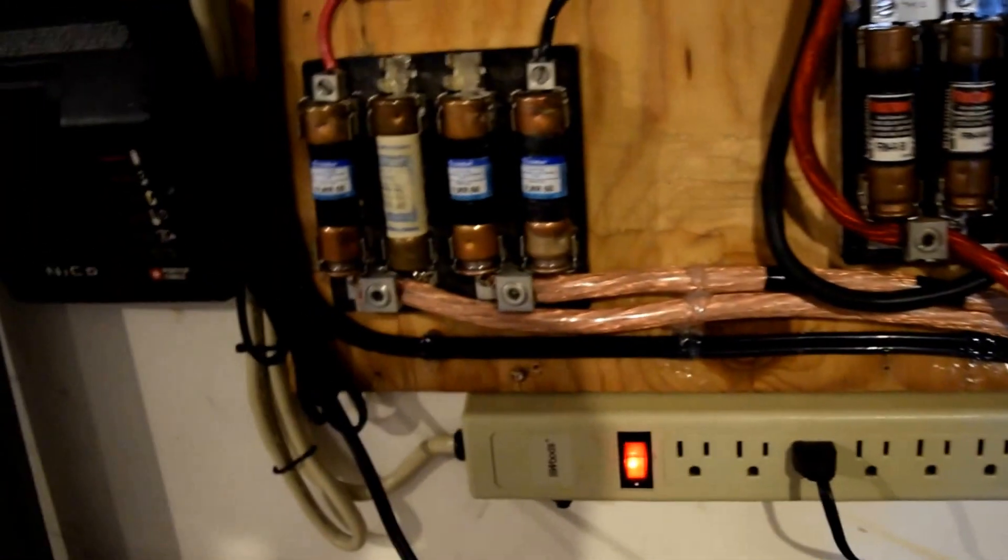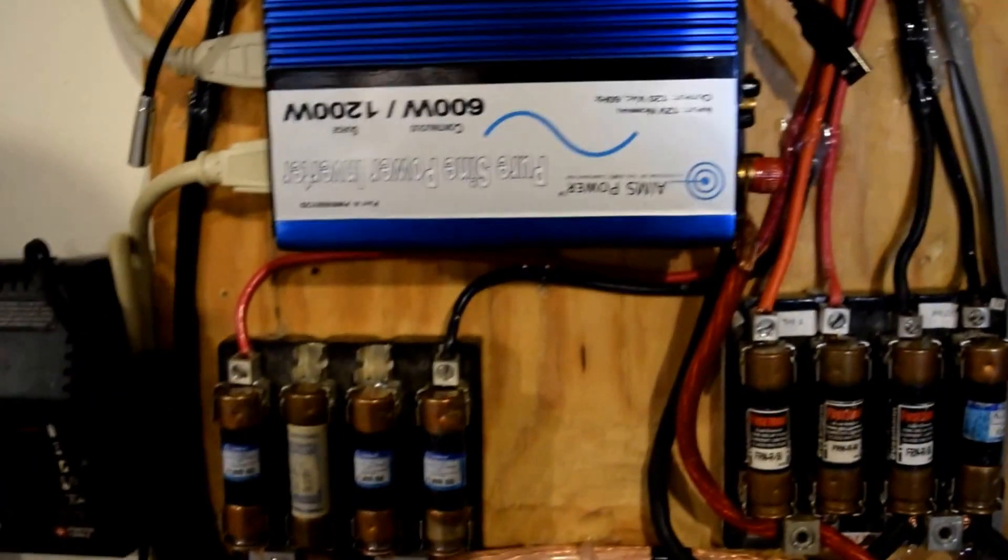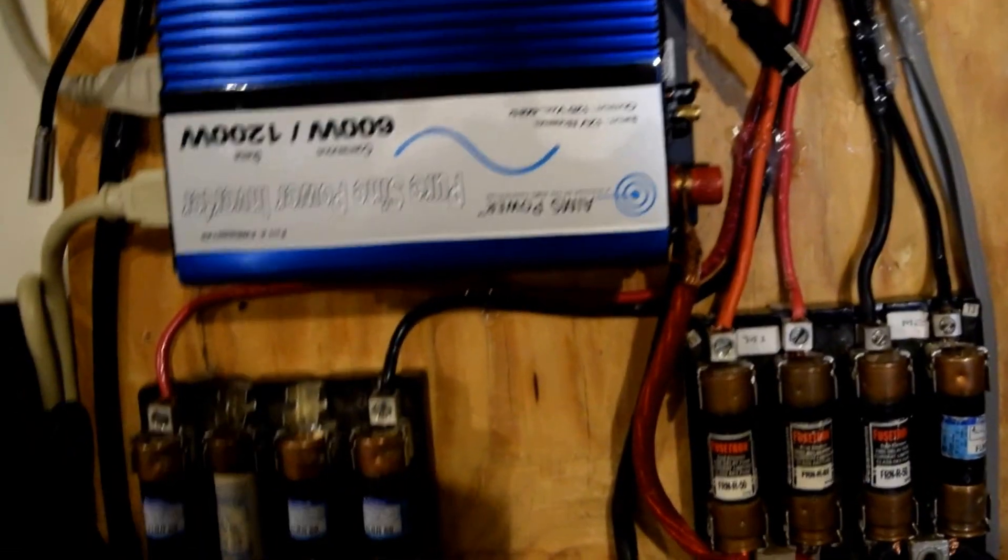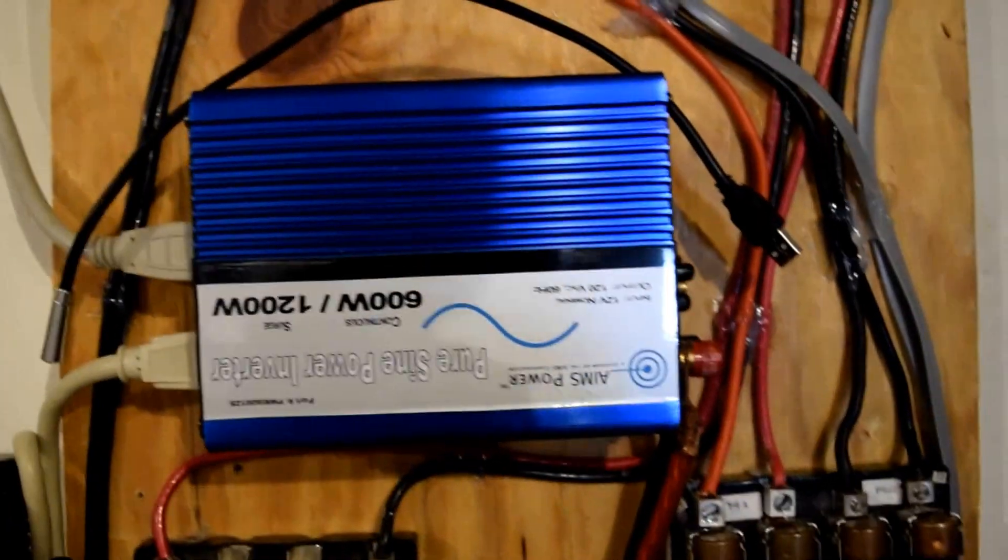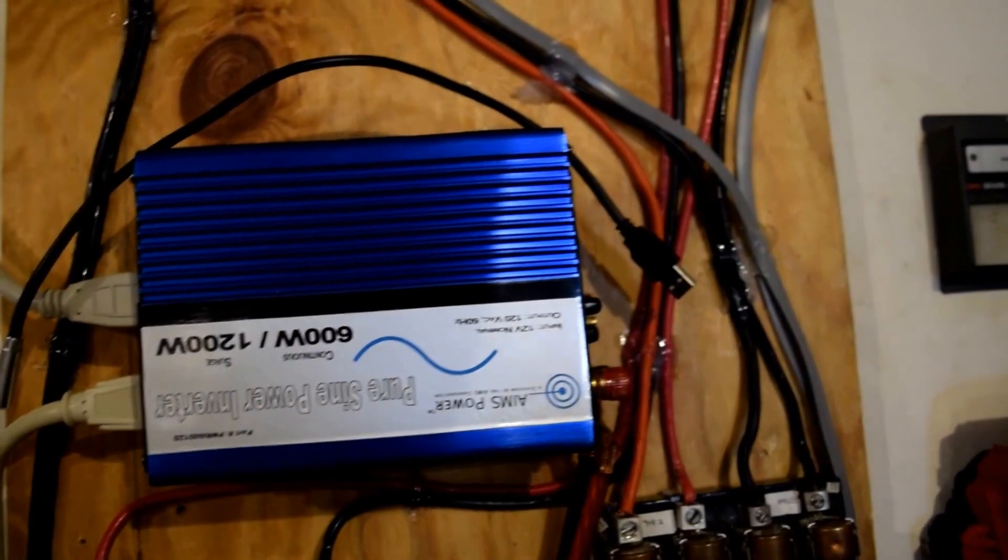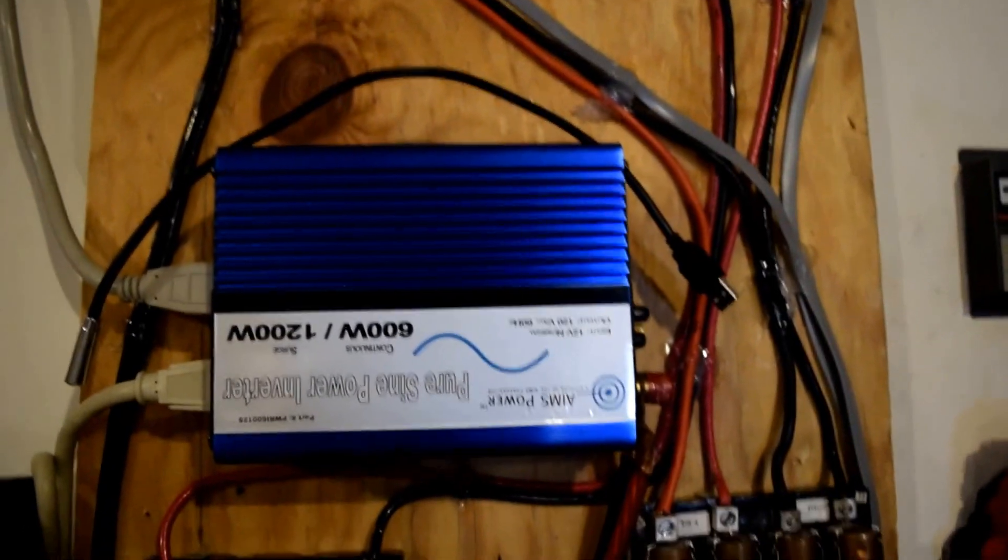And then there's my very cheap inexpensive pure sine wave inverter. I got a 600 watt on purpose. I could afford a larger one but I didn't need a larger one. I don't want one that's too big because if it's too big it uses a lot of power just to be on and I don't want to drain my batteries. This system is a small system, I'm aware that it's a small system.